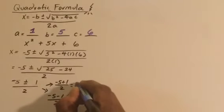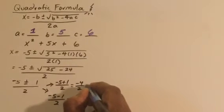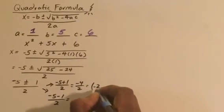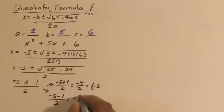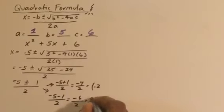Now, when we simplify, we get negative 4 divided by 2, which is negative 2, and we get negative 5 minus 1, which is negative 6 divided by 2, which is negative 3.